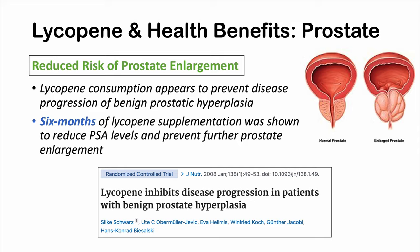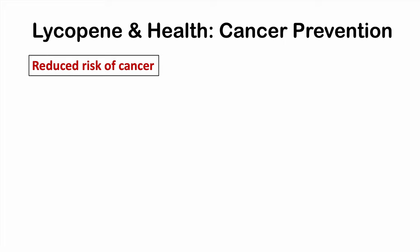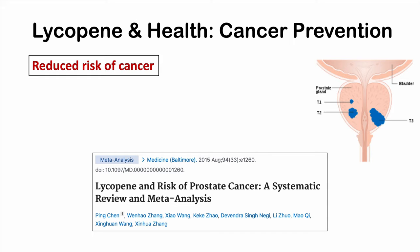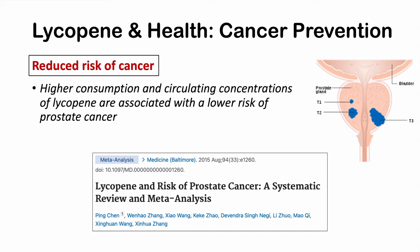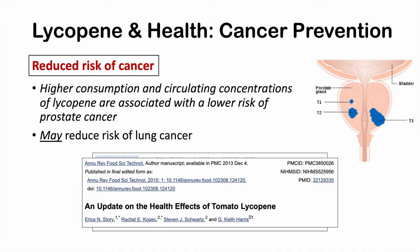There's also evidence to suggest lycopene has some ability to reduce the risk of cancer. This comes from a meta-analysis entitled 'Lycopene and Risk of Prostate Cancer: A Systematic Review and Meta-Analysis.' Higher consumption and circulating concentrations of lycopene are associated with a lower risk of prostate cancer. There's also some evidence suggesting lycopene may reduce risk of lung cancer, from the article 'An Update on the Health Effects of Tomato Lycopene,' though some evidence suggests no change.